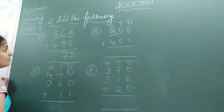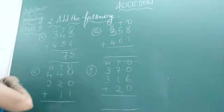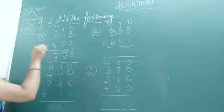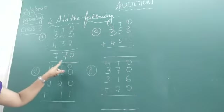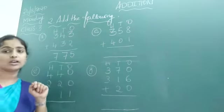What is 4 plus 3? 7. Next, 3 plus 4? 7. So how much you got the required answer? 775 is the required answer.